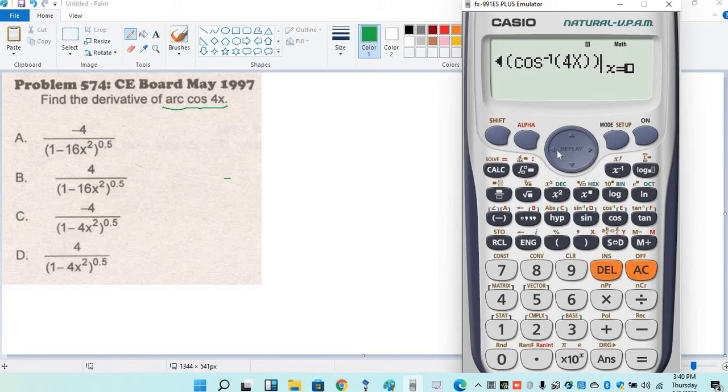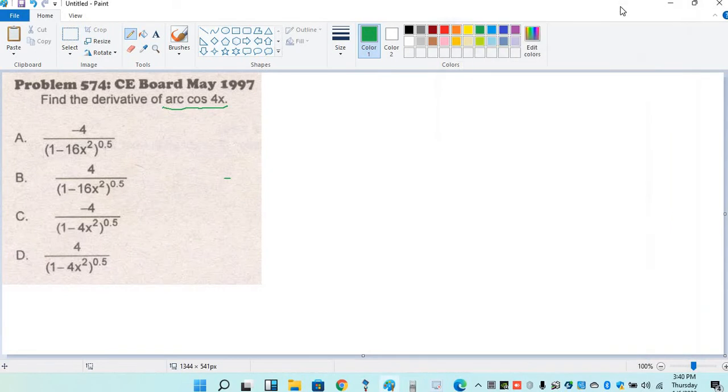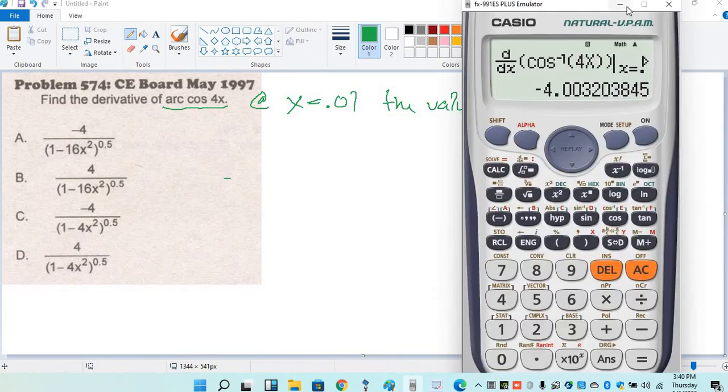We will assign any value, let's say 0.01. Equal, negative 4. So at x equals 0.01, the value is negative 4.